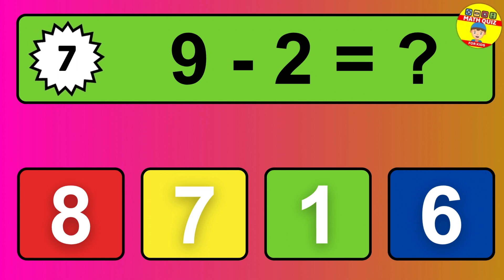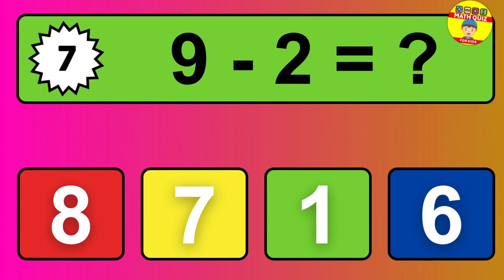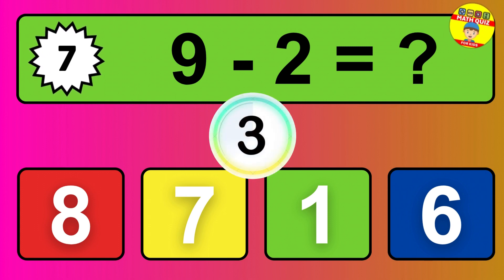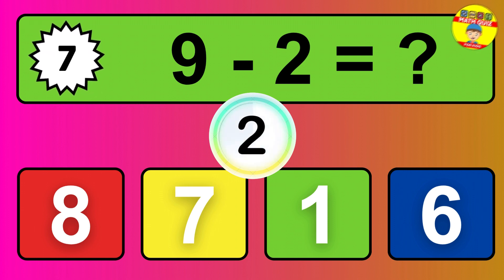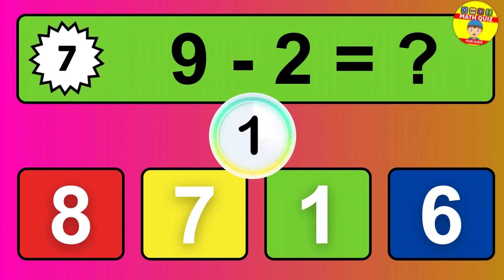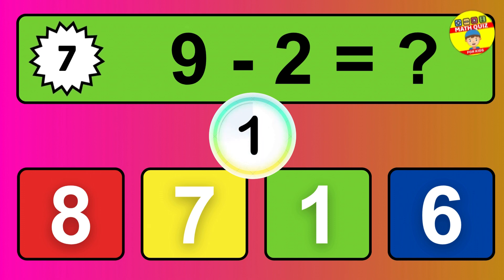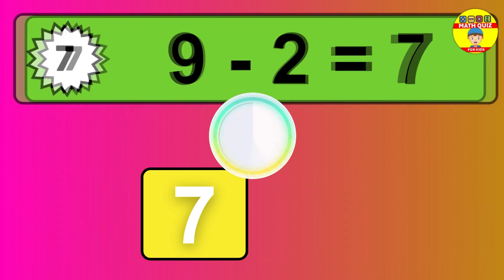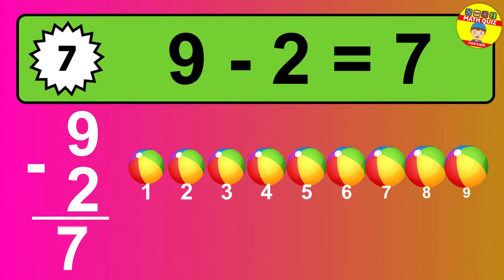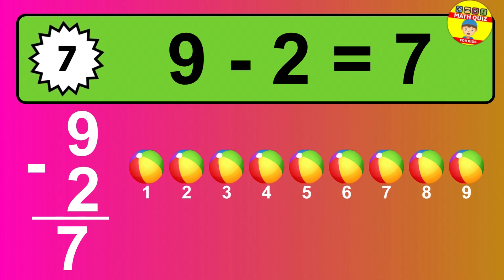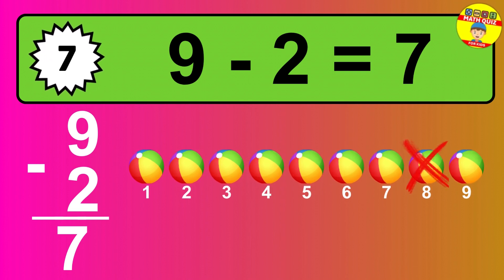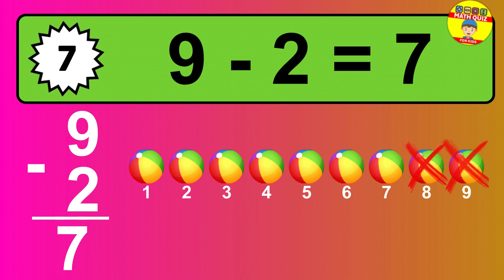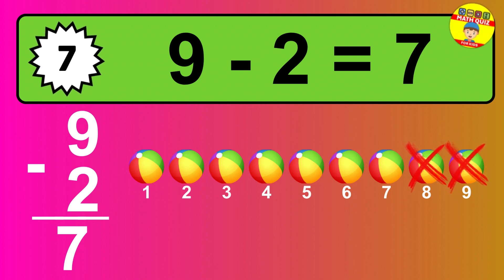Question 7: 9 minus 2 equals what? The answer is 9 minus 2 is 7. Let's count it: 1, 2, 3, 4, 5, 6, 7.